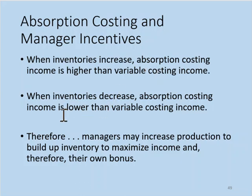The opposite is true when inventories decline — when fewer units are produced than sold. In that case, absorption costing income would be lower than variable costing income because more of those fixed costs are charged as an expense rather than sitting in inventory. This creates potentially undesirable manager incentives under absorption costing: managers may try to increase production to build up inventory in order to minimize or maximize their bonus. The contribution margin income statement is usually a better management tool for that reason.